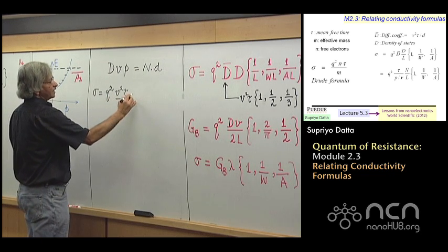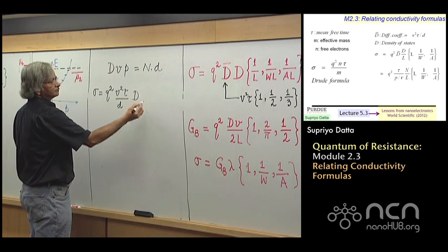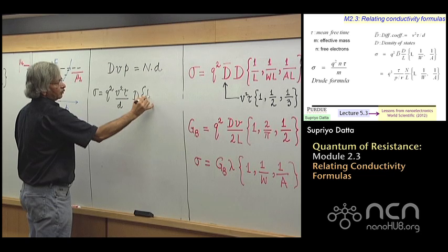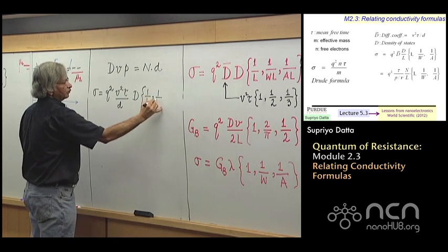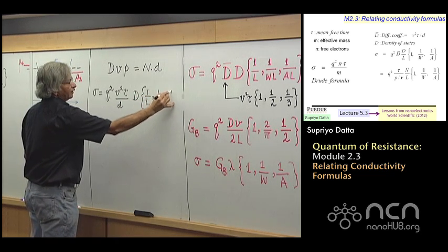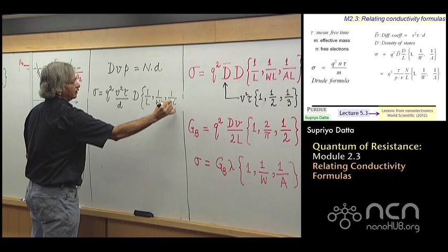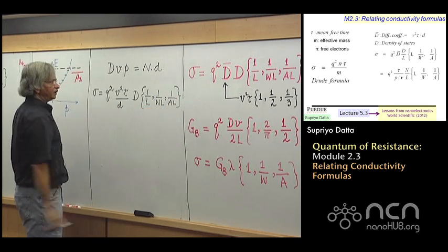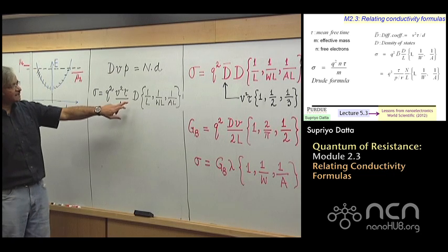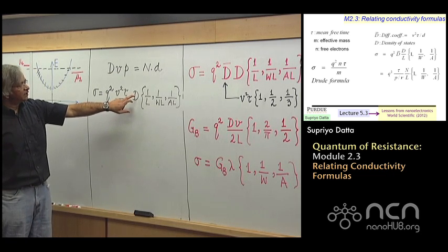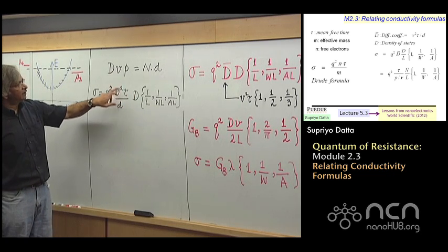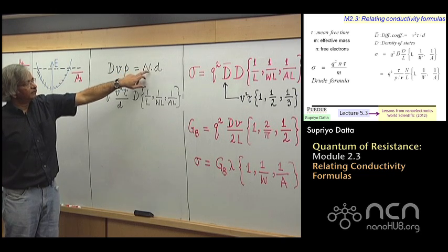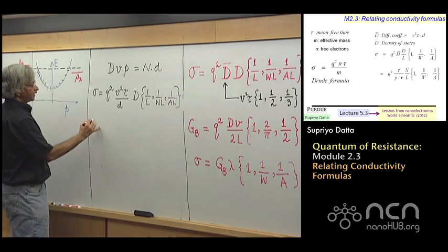And then there is the density of states, and then, like 1 over L or 1 over WL or 1 over AL, depending on whether we have a 1-d conductor, 2-d conductor or a 3-d conductor. So next step is, instead of dv, let me replace from this expression. So what you would get then is, q square dv divided by the number of dimensions is equal to n divided by p.